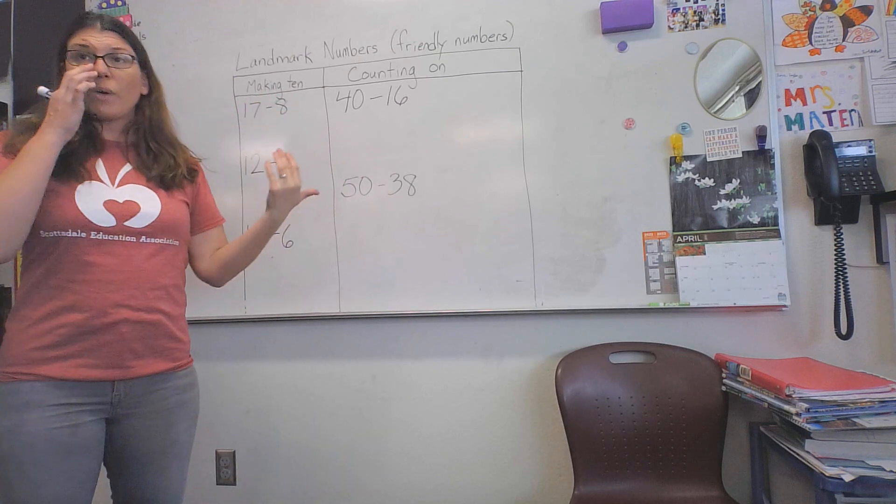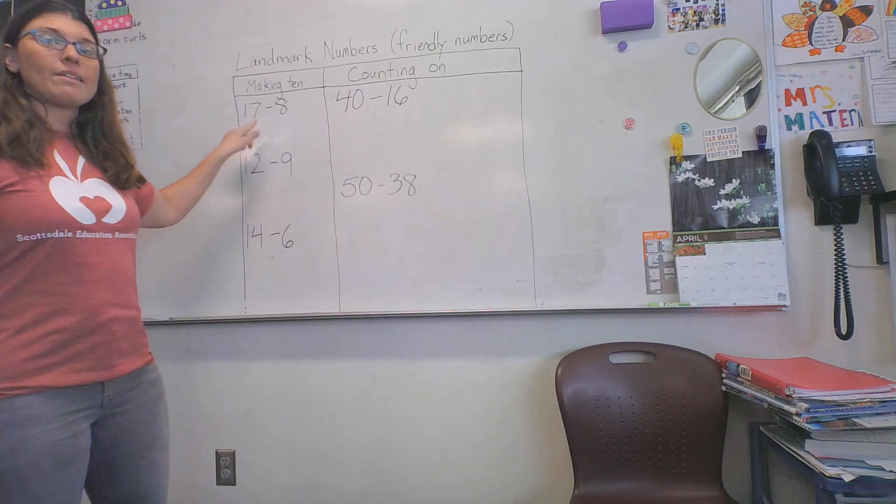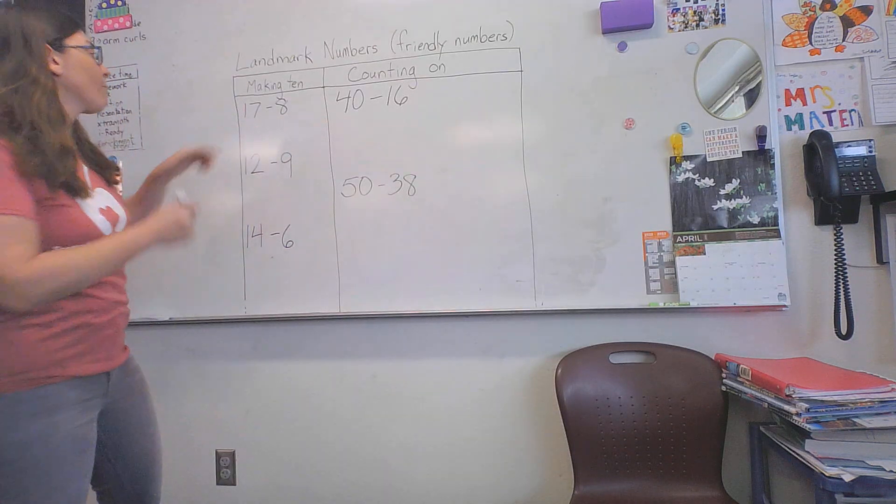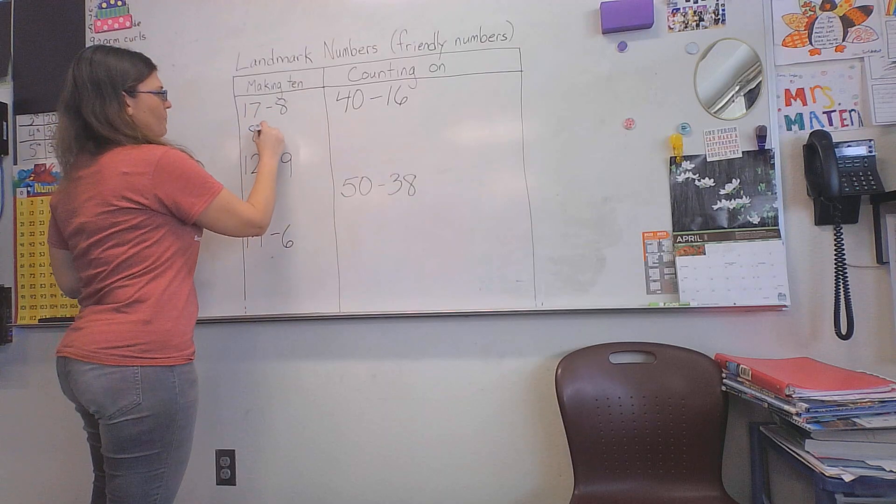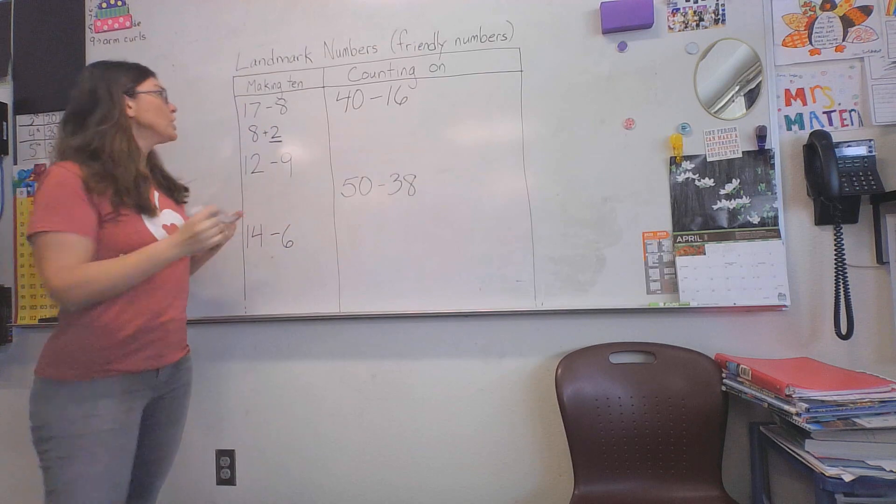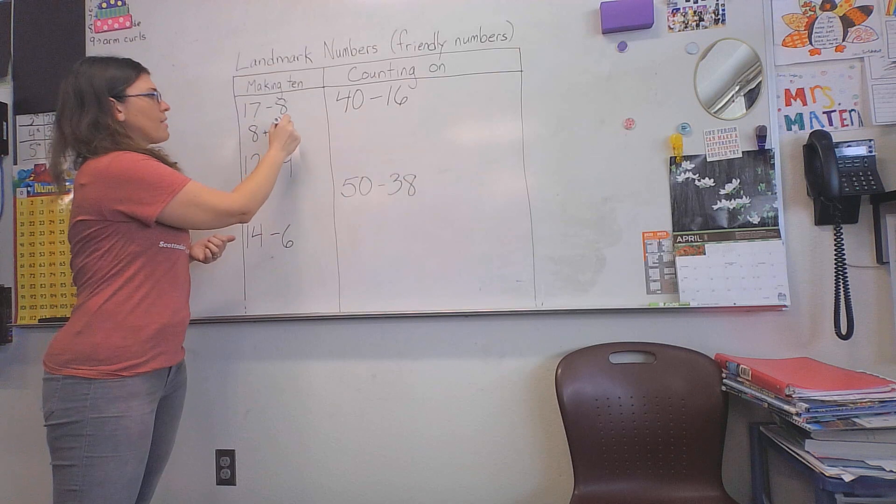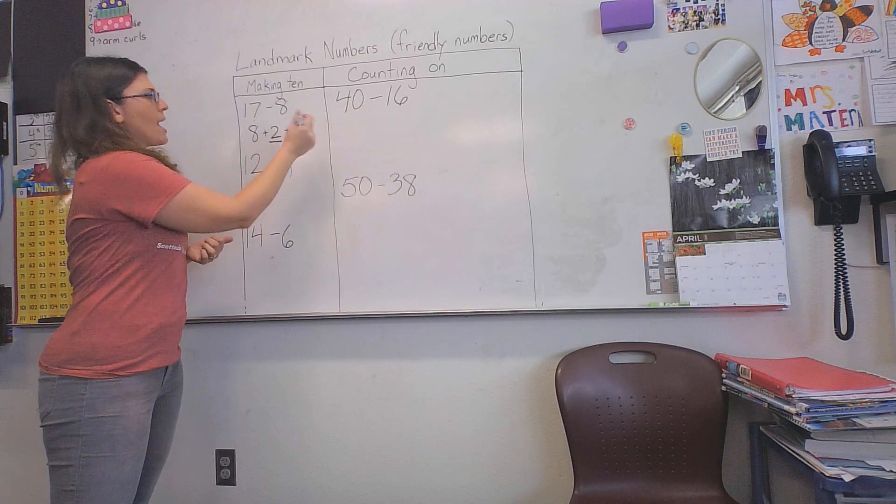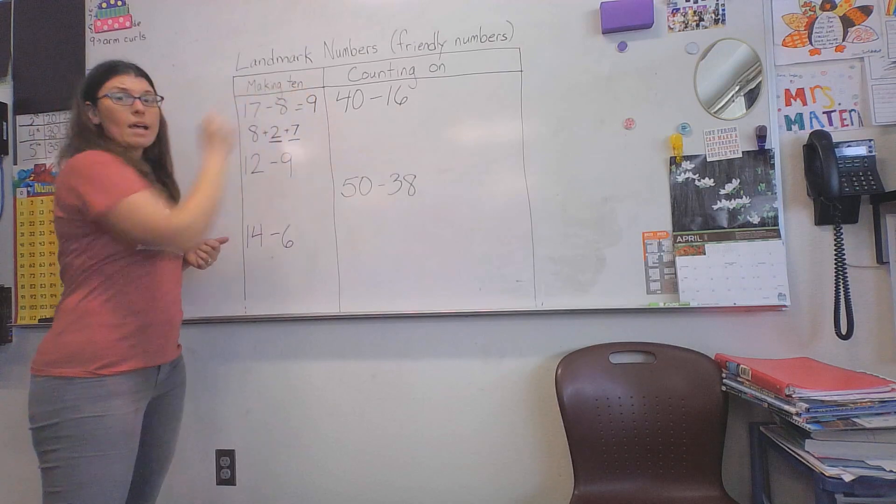A more efficient way is to think about how much to get to 10, and then how much more to get to 17. Students can count on to make a 10. They know 8 plus 2 makes 10, and then 10 plus 7 more makes 17. Therefore, 17 minus 8 equals 9.